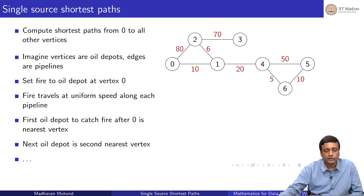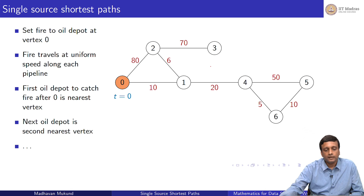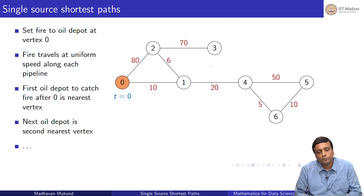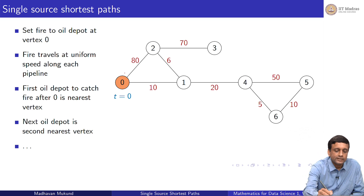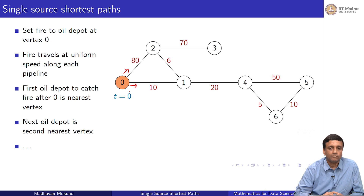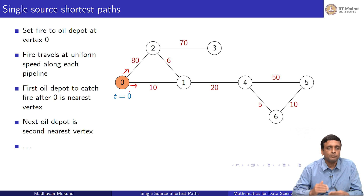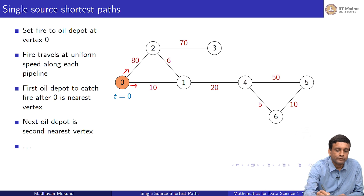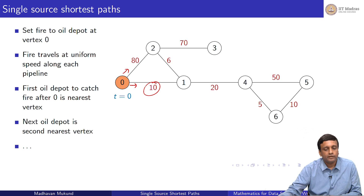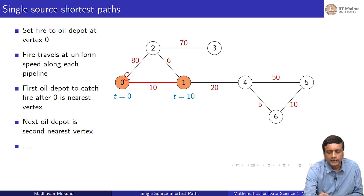Let us see how it works. We start by saying that initially, at time 0, we burn the 0th vertex. This fire starts moving in two directions. Assuming fire moves at 1 unit length per 1 unit time, here it has to move 10 units of length — so in 10 units of time, it reaches vertex 1.